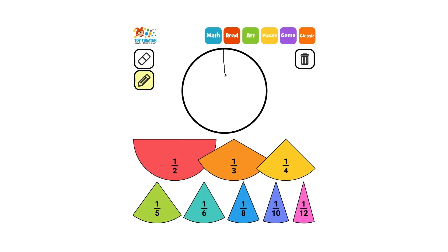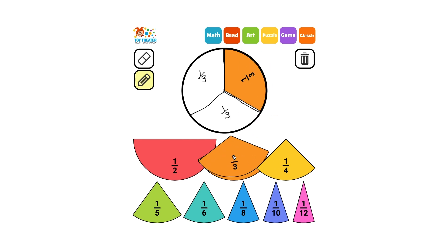Thirds is a little trickier. We need to draw a line from the top to the center and then lines from the center to the sides a third of the way from the top. Now we have three equal shares. Three thirds make one whole circle.